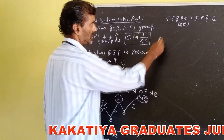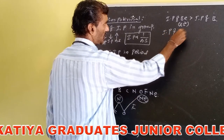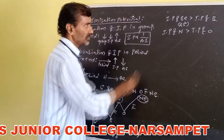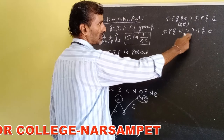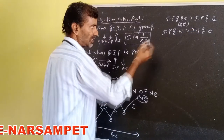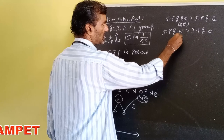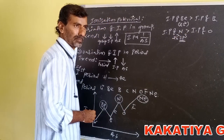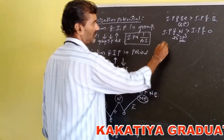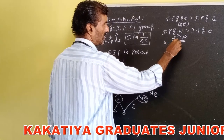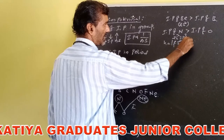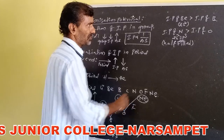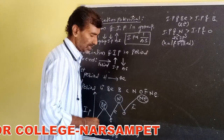Second exception: IP of nitrogen is greater than IP of oxygen. Nitrogen has the configuration 2s², 2p³ — that is a half-filled configuration. Hence, nitrogen has a higher ionization potential value compared to oxygen.